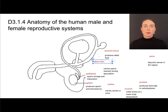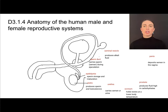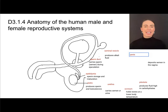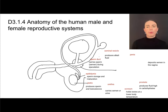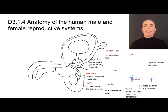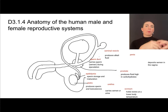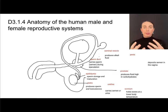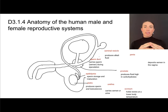This is the sperm duct, also known as the vas deferens — it carries sperm and semen during ejaculation. The prostate is a gland that produces fluid that is high in carbohydrates. Semen is the collection of the sperm and the fluid. The prostate produces part of that fluid, providing the sperm with energy as it moves through the female reproductive tract.